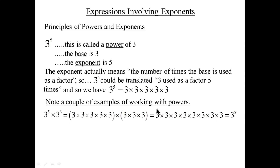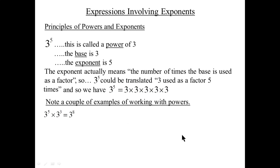Math people have a way of avoiding writing all that out and going straight to the answer. Three to the fifth times three to the three is three to the eighth. The shortcut: when you multiply powers of the same base, keep the base and add the exponents. We keep the base three and add the exponents: five plus three is eight.